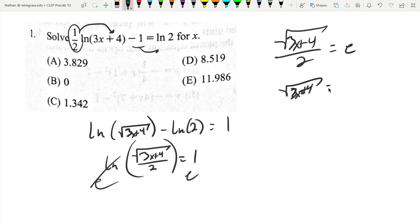Square root of 3x plus 4 equals 2e. Now I can take the squared power of both sides, 3x plus 4 equals 4e squared, subtract 4, divide by 3. So x equals 4e squared minus 4 divided by 3.